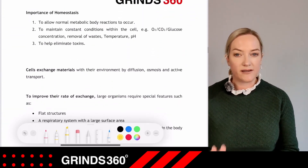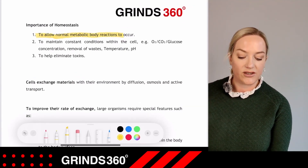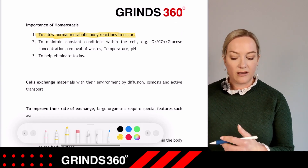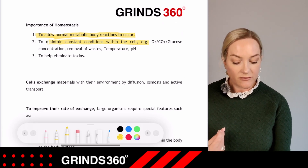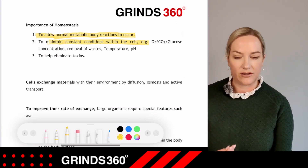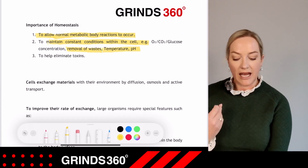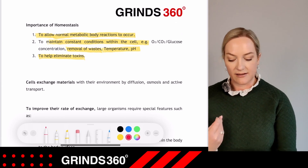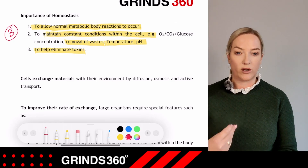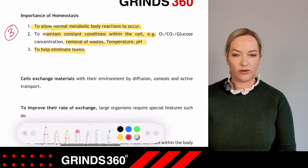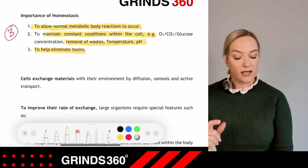The importance of homeostasis: it allows normal metabolic reactions to occur and maintains constant conditions within the cell. For example, oxygen, carbon dioxide, or glucose concentration — we can remove these wastes — as well as temperature and pH. It can also help to eliminate toxins. Learn at least two to three key points on the importance of homeostasis.